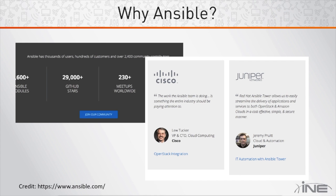As you can see, there are 29,000 stars on GitHub and 230 meetups worldwide, so Ansible is very popular — you can find and solve bugs more quickly, as well as get answers when you need them. And as you can see from the quote, both Cisco and Juniper liked it. When was the last time they agreed on anything?